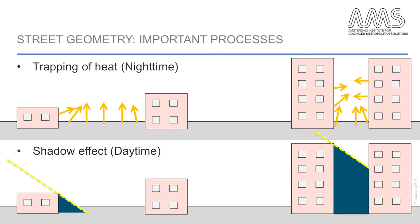On the other hand, open spaces in the city receive a lot of energy from the sun during the day. Whereas in narrow streets with high buildings, solar energy usually does not completely enter the street, resulting in a shadowing effect. This daytime process causes air temperatures to decrease with enhanced height-to-width ratios.